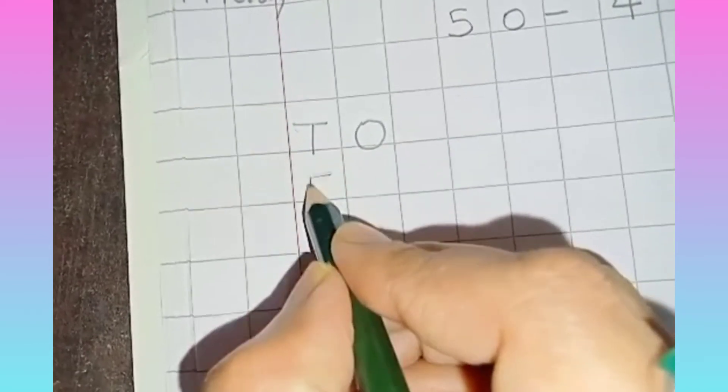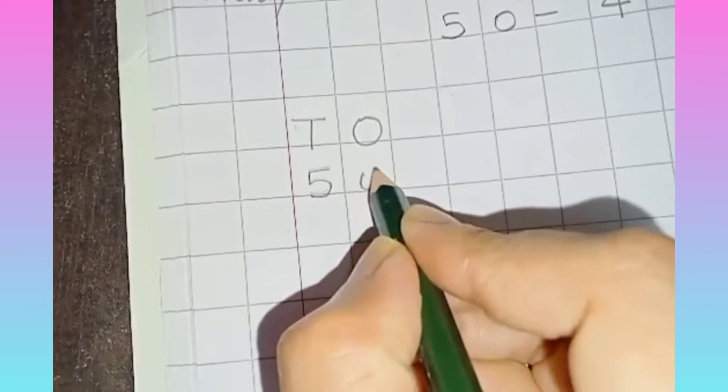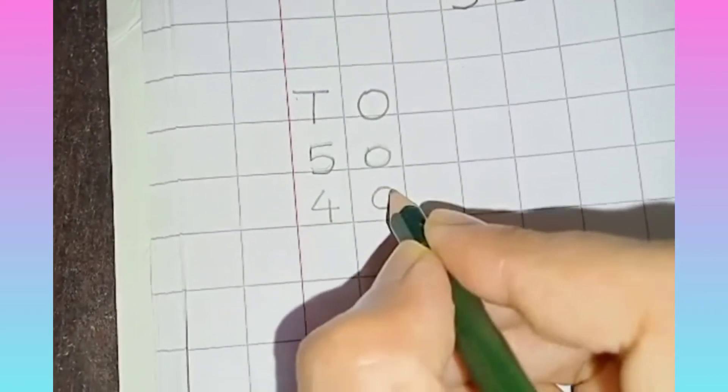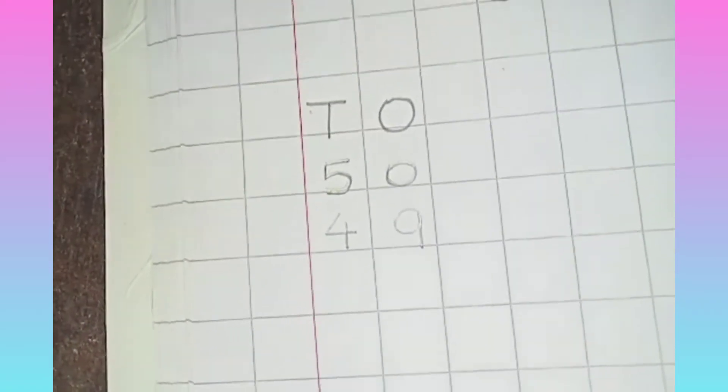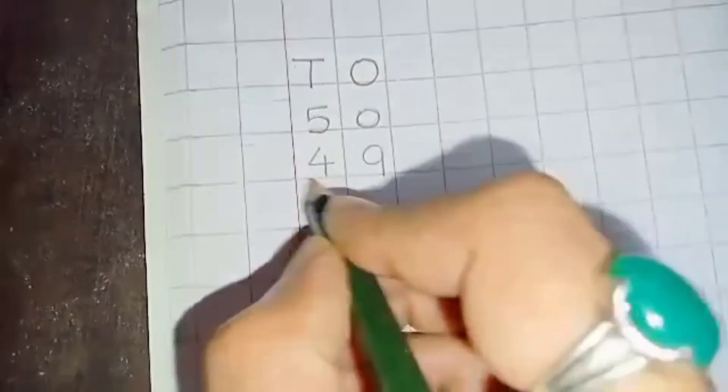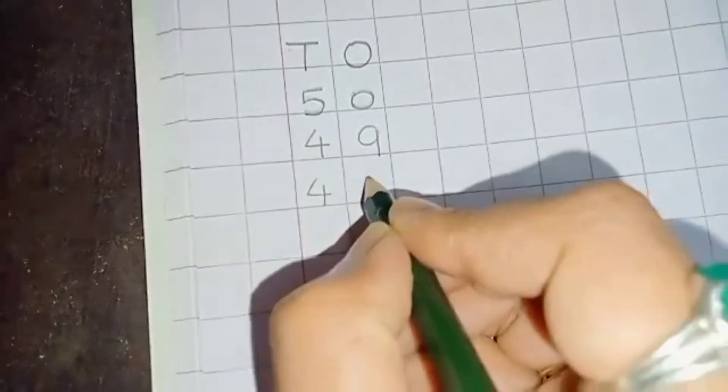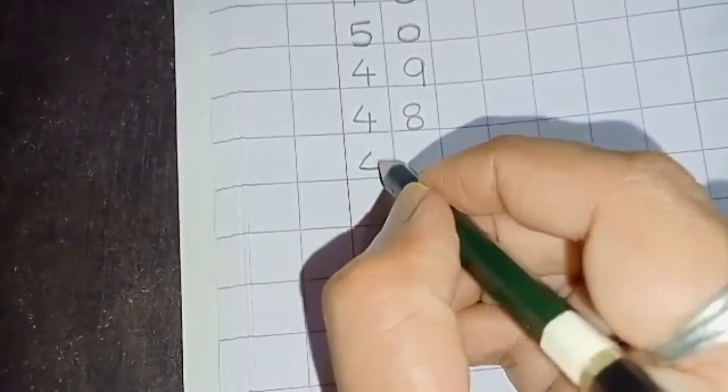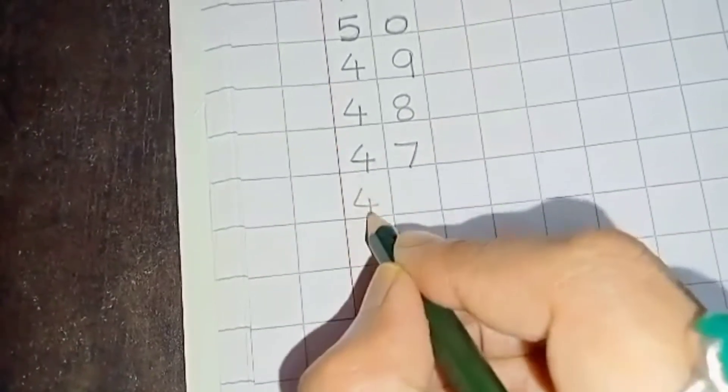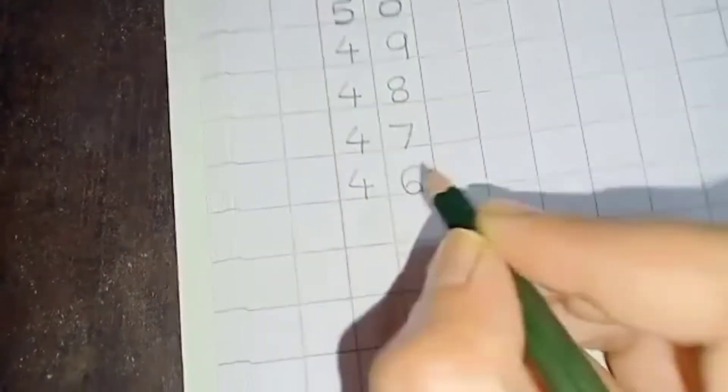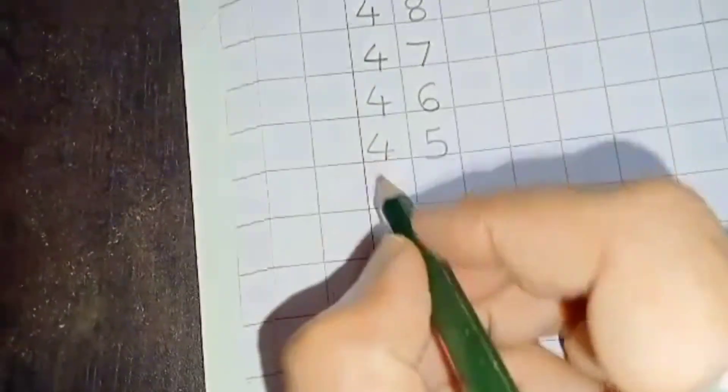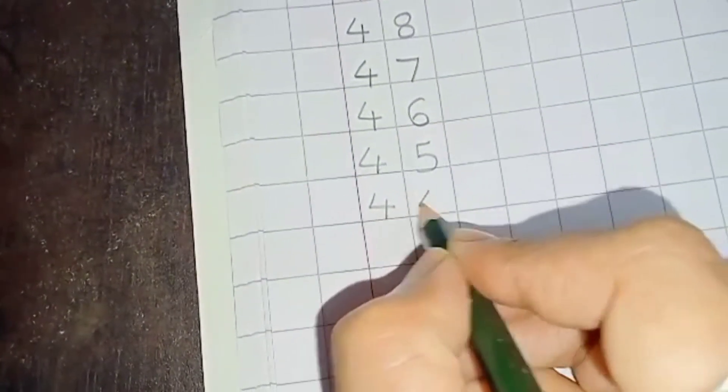We will go backwards from 50. Then 49, then 48. Remember we are going backwards. Then 47, 46, 45.